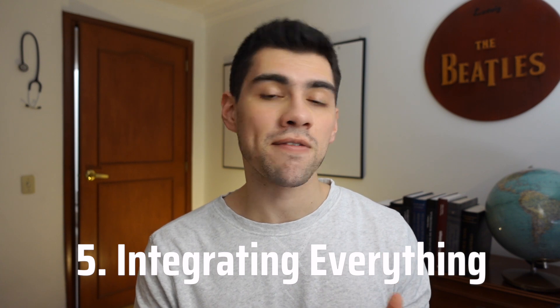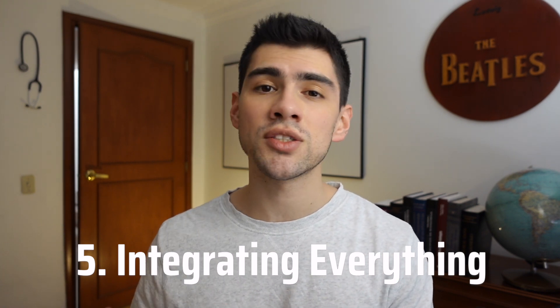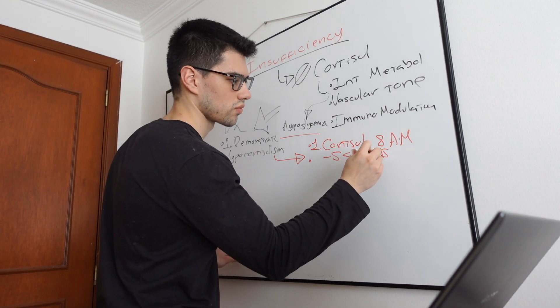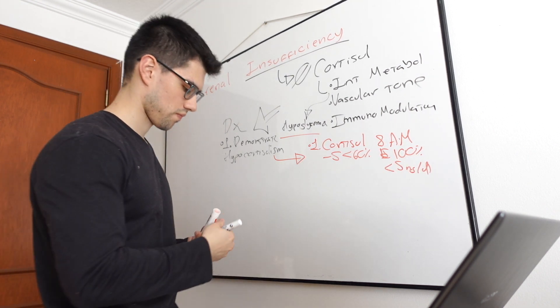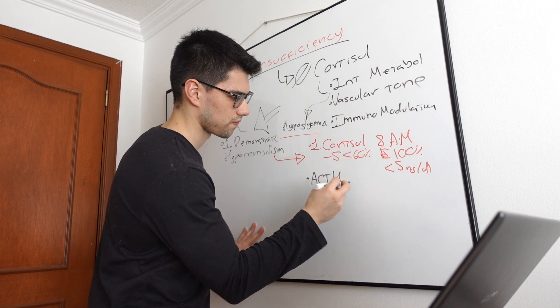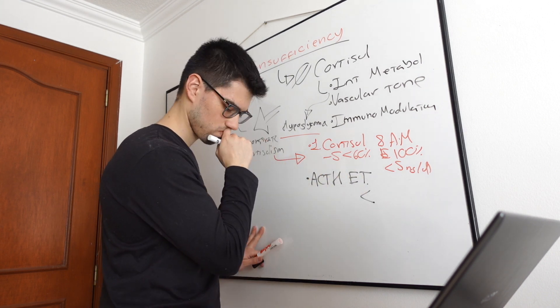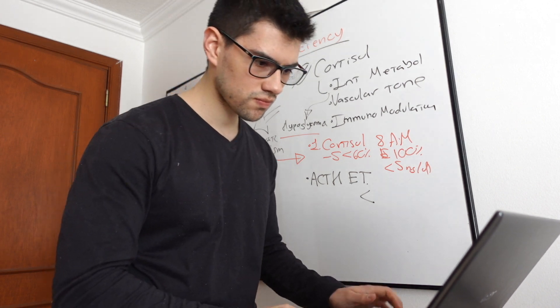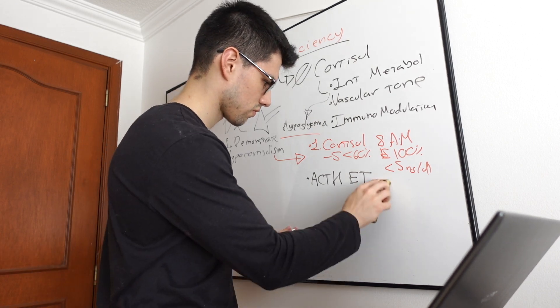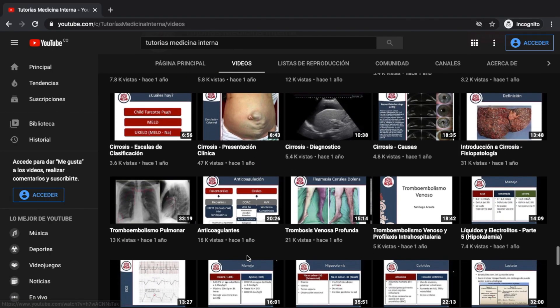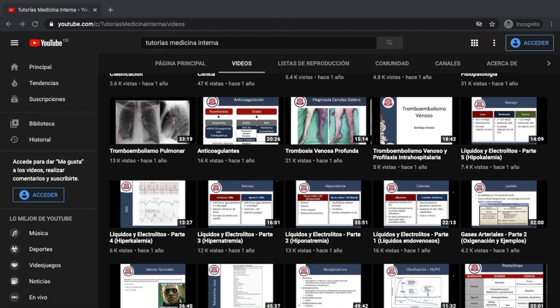Finally, the last step is to integrate everything you learned. The method I recommend most is the Feynman technique — just pretend you're explaining the subject to someone who knows nothing about it, and be as specific and detailed as possible. If something is foggy during your explanation, go back and review it. If you tend to forget some details, consider making flashcards. That's pretty much everything I do whenever I need to master a subject — in fact, most of the lectures on my Spanish YouTube channel were created using these five steps.